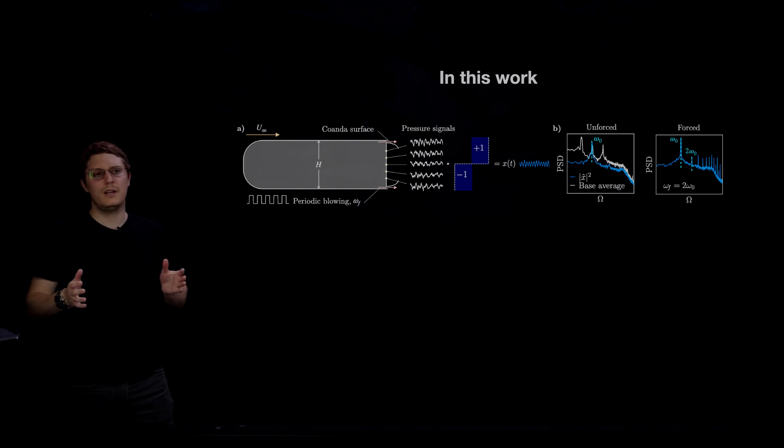And other authors have looked at the power spectrum of x when the flow, or a similar flow, is periodically forced, either at the natural frequency or at an integral multiple of it. Here we take a look at how does the power spectrum changes for over 200 different forcing frequencies, ranging between zero and three times the shedding frequency.